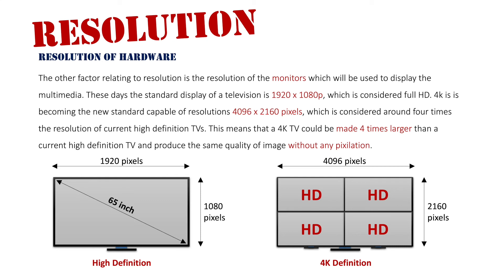We also need to understand how image resolution interacts with screen resolution. If you put an image that is lower in resolution onto a higher resolution screen — for example, an HD image onto a 4K TV — you'll see pixelation because the image gets stretched and won't look as good on a larger display. On the flip side, if you put a 4K image onto an HD TV, there is no benefit — it will still be displayed as HD, so it's a waste of file space.